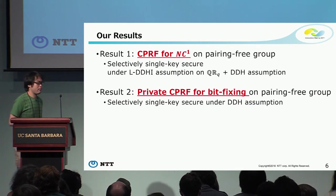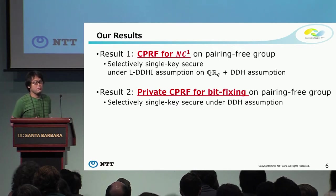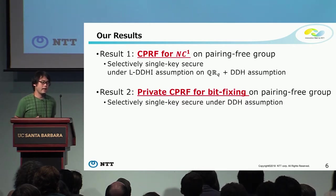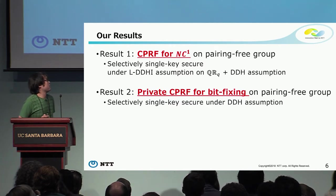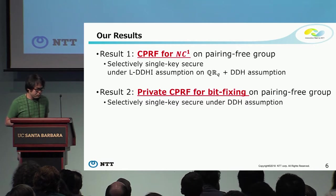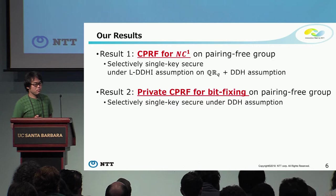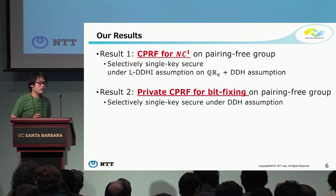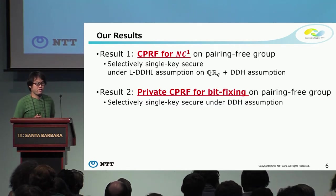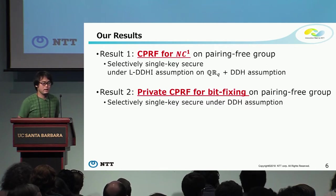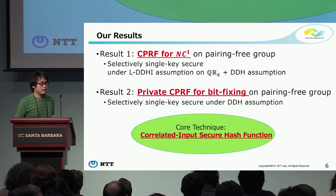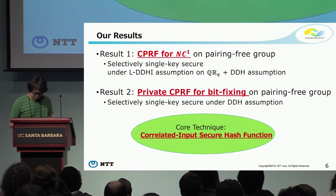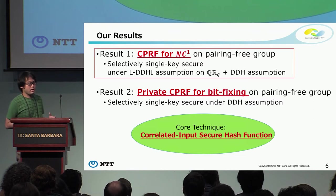Here is a summary of our results. As our first result, we construct a CPRF for NC1 circuits on pairing-free groups. This construction is selectively single-key secure under the L-DDH assumption on the quadratic residue group QR_Q, and the DDH assumption on another group. The L-DDH assumption is a parameterized assumption by an integer, which I will explain later. Our second result is a private CPRF for bit-fixing functions on pairing-free groups, also selectively single-key secure under the L-DDH assumption. The core technique common to both is a novel use of correlated input secure hash functions. In this talk I will mainly explain our first result.